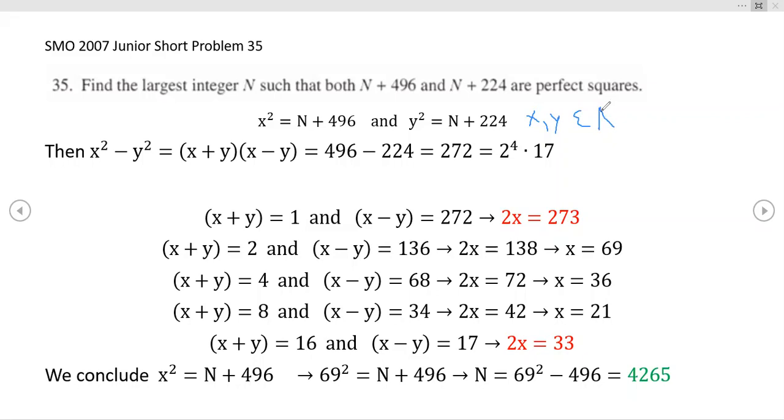This just says that X and Y are natural numbers, numbers like 1, 2, 3, 4. They're positive integers, is what a lot of people like to call it. Some people call this Z plus. We've just done what the problem asks us to do, which is to impose the condition that N + 496 is a square integer, and N + 224 is a square integer.